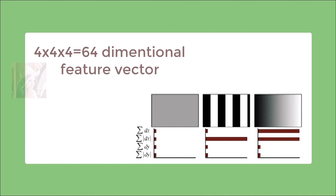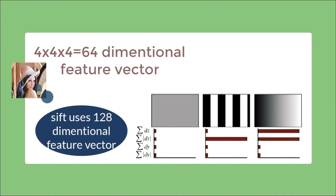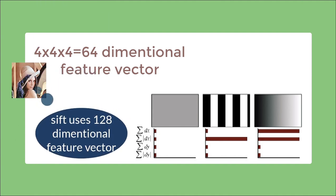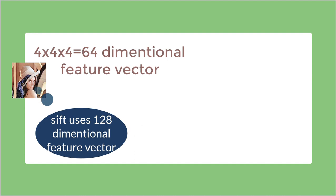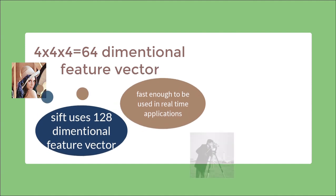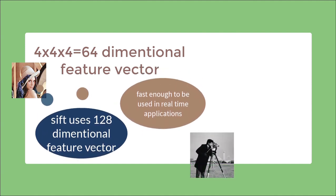This process results in a 64-dimensional feature vector for each key point. Remember that SIFT used a much bigger 128-dimensional feature vector. This SURF feature vector is not only faster to compute, but also faster to match, as it requires less number of dimensions. Moreover, to make the features invariant to illumination, these feature vectors are normalized.